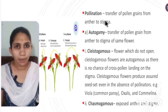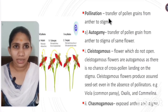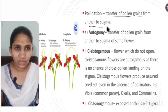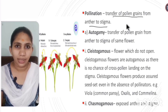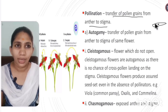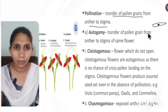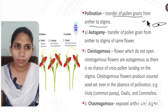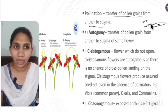Pollination means transfer of pollen grains from anther to the stigma. Pollination occurs via various external factors such as water, wind, and insects.